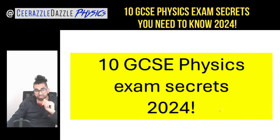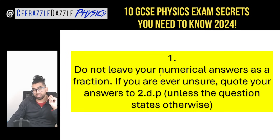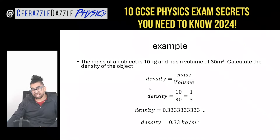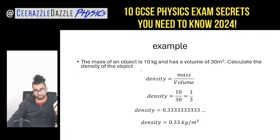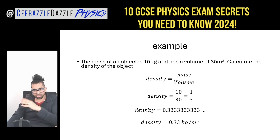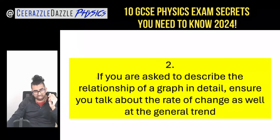Here are my 10 GCSE physics exam secrets for 2024. Number one: do not leave your numerical answers as a fraction. Quote your answer to two decimal places unless the question states otherwise. For example, if mass is 10 kg and volume is 30 m³, density equals 10 divided by 30 — that's one third. Do not leave it as a fraction, nor as 0.3333... Round it to two decimal places: 0.33.